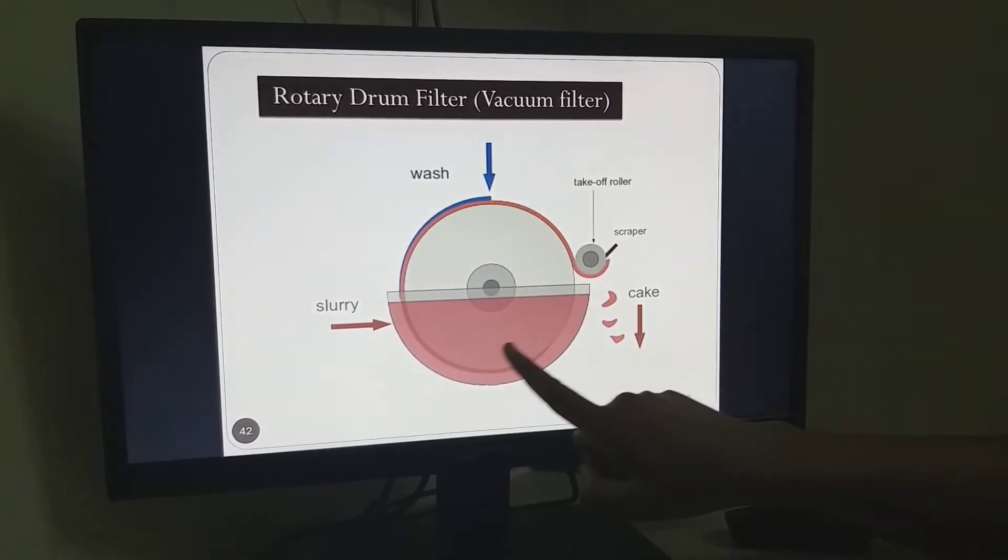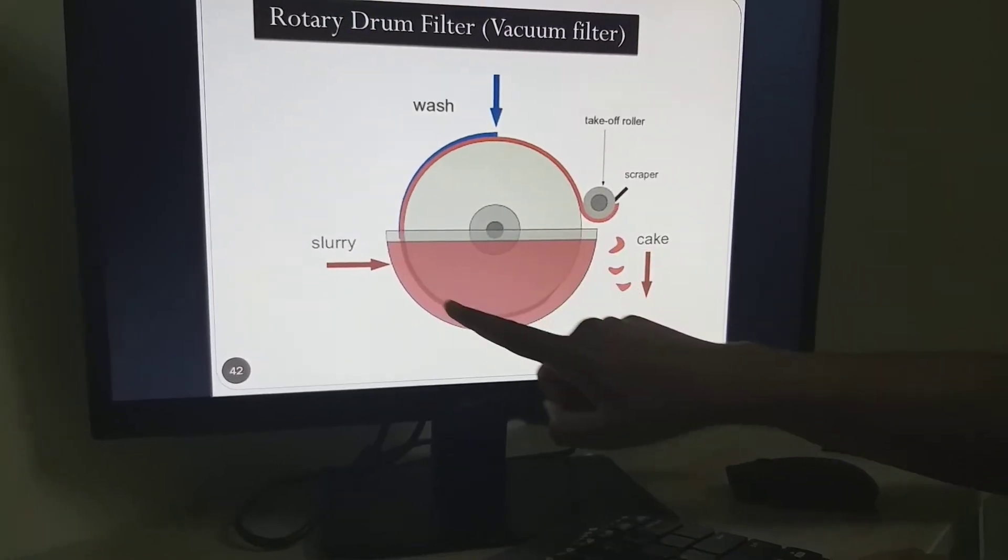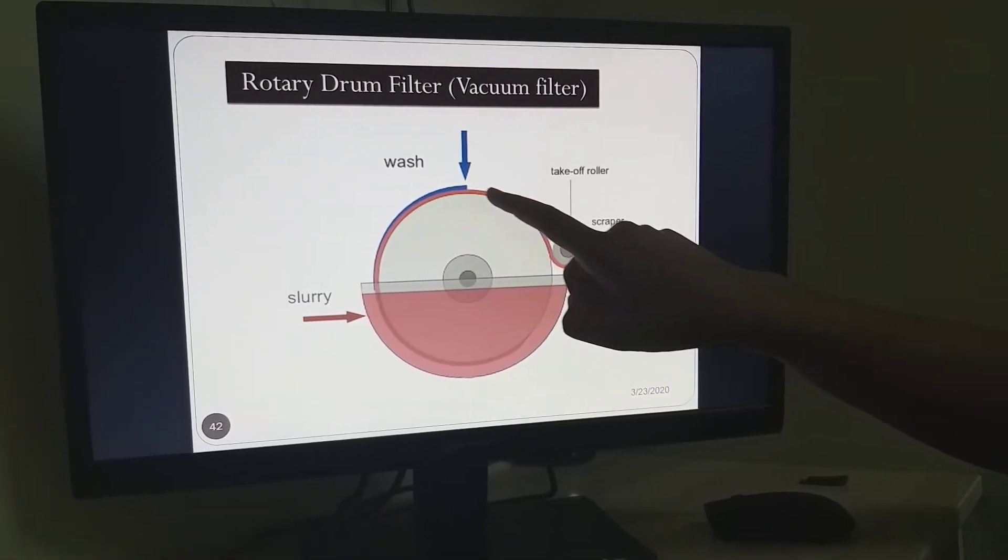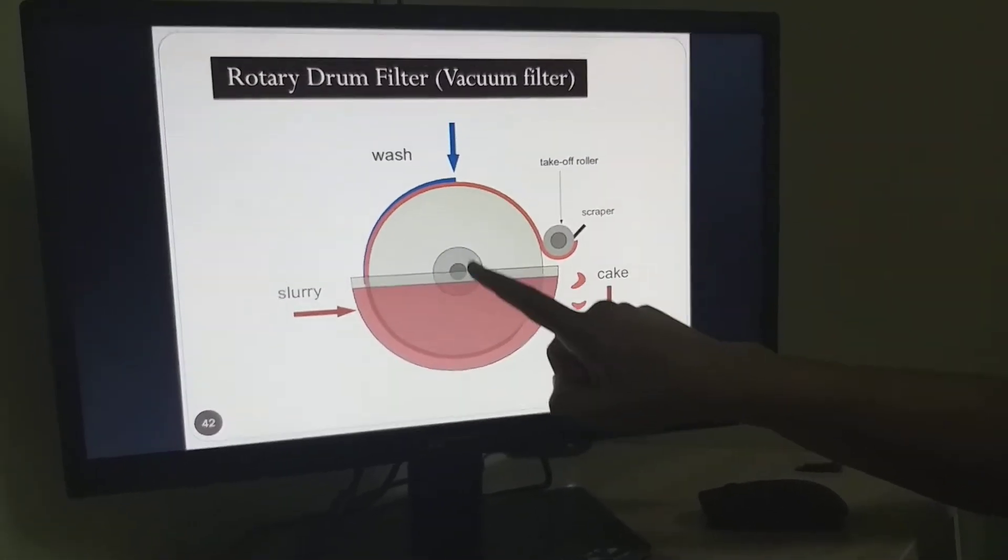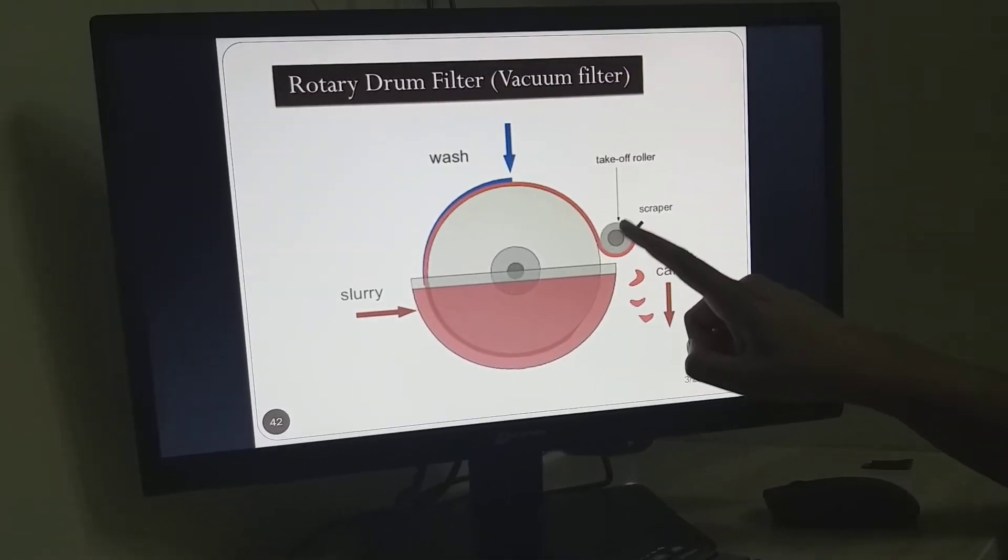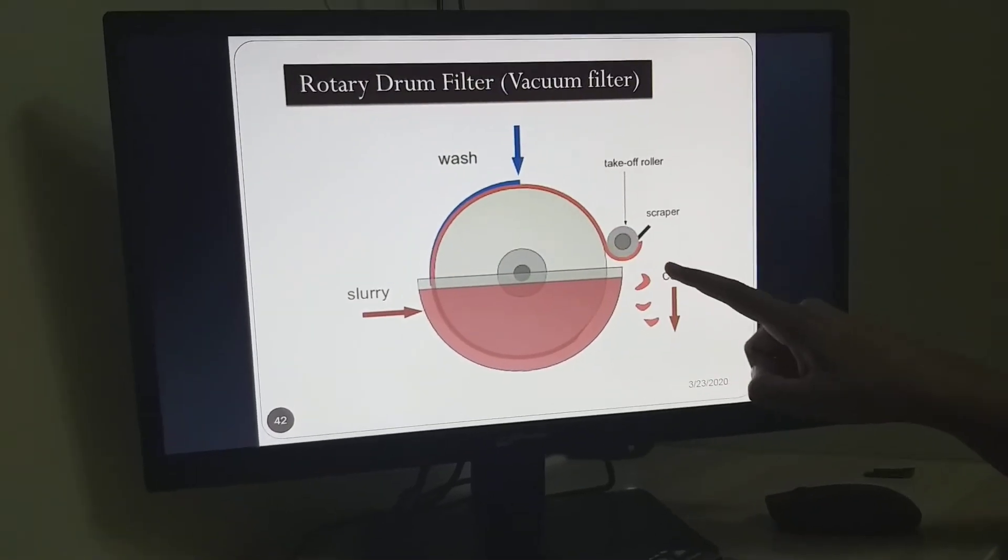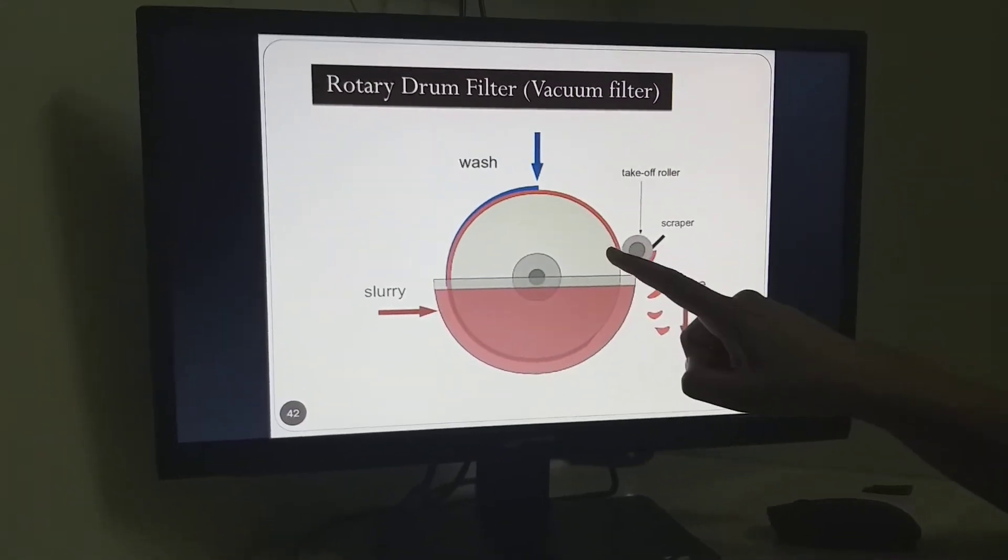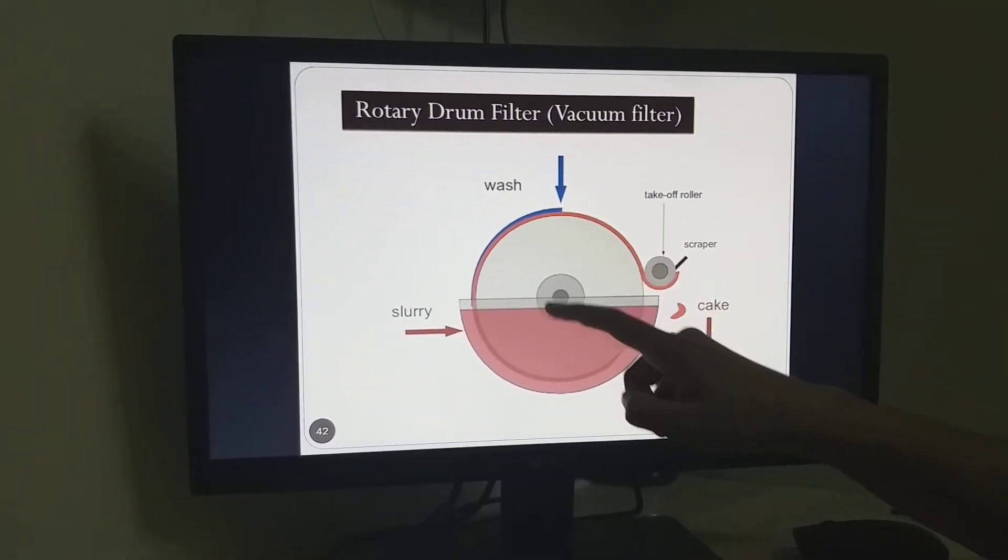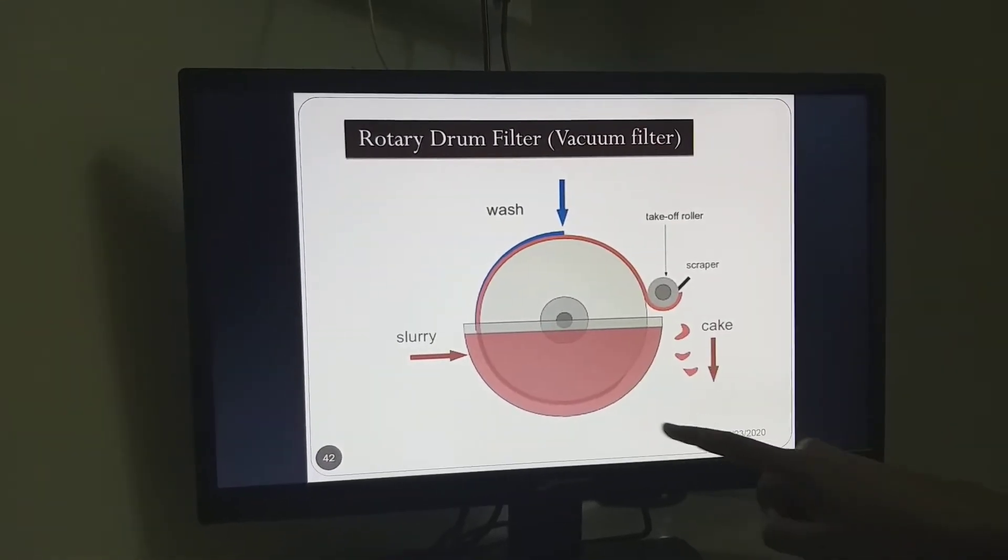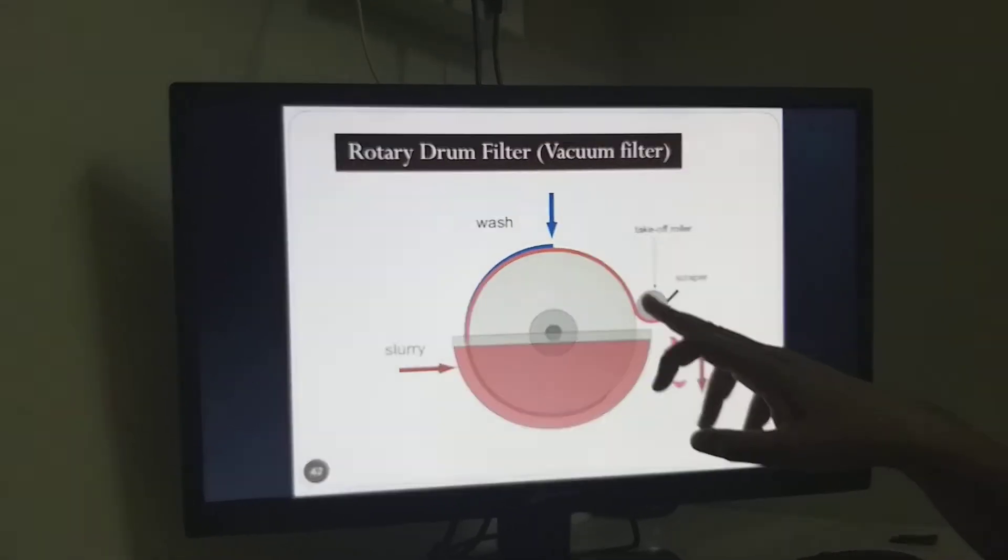This is the rotor, or rotary drum, which can dip half of the drum inside this trough. This red one is the cake deposited on the drum, and inside the drum, vacuum is applied. The scraper is provided near this rotating drum to remove the cake. As vacuum is created inside, the liquid goes inside and we have a separate tank to collect it differently from the cake.